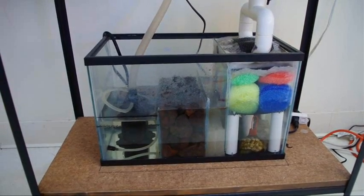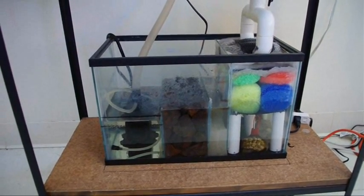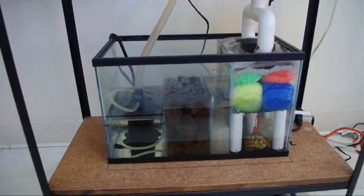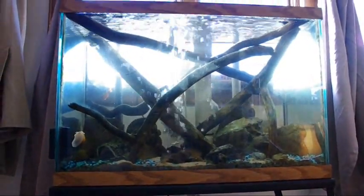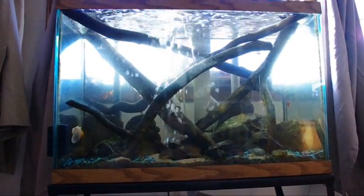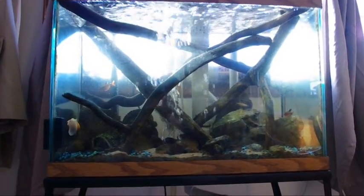Okay, so I'm just going to walk you through my five and a half gallon nano sump for my 20 gallon community tank. As you can see, the water is fairly clear at this point. You've got about seven, eight fish in there, a couple snails, things like that.